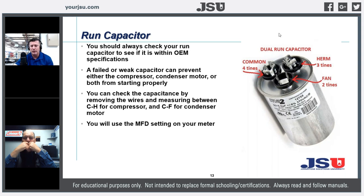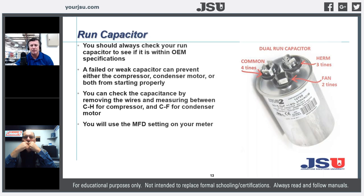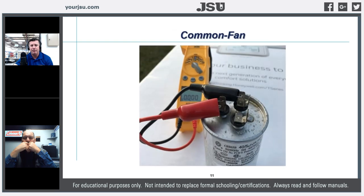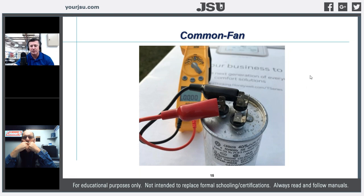A weak capacitor will affect the starting of a motor because it's not providing potential energy to the start winding. We can test our capacitors from common to Herm and from common to fan. The capacitor label tells us the tolerance for that particular unit — for example, a 40+5 rated at 440 volts with plus or minus 5%. If it's outside that 5% tolerance on either rating, the capacitor needs to be replaced.